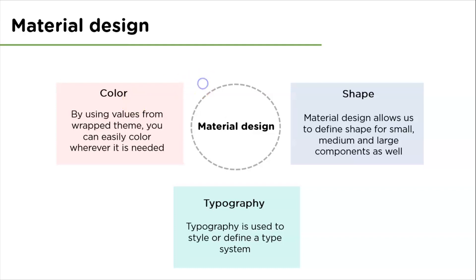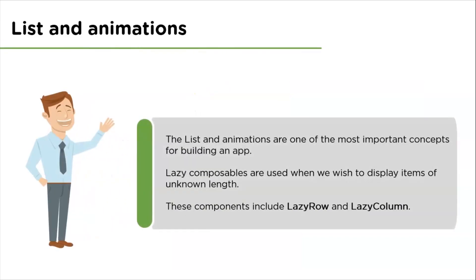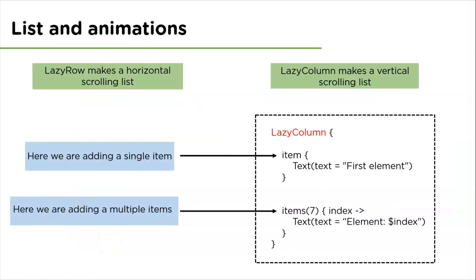Coming to the next topic which is list and animations. Lists and animations are one of the most important things for building an app. We have already discussed row and column earlier. Here we will discuss lazy composables, which include lazy row and lazy column. The lazy row makes a horizontal scrolling list and the lazy column makes a vertical scrolling list. In this example, lazy column is used. This is how we add elements or items — here we are adding a single item and here we are adding multiple items. With items, there is an integer 7 which means 7 items can be added.